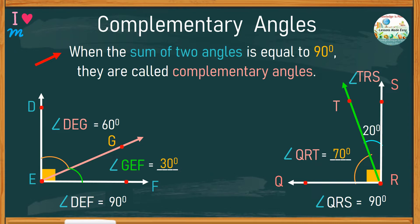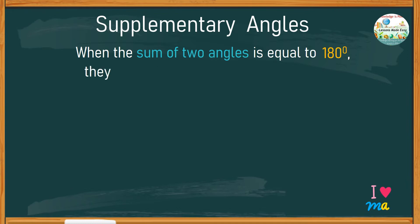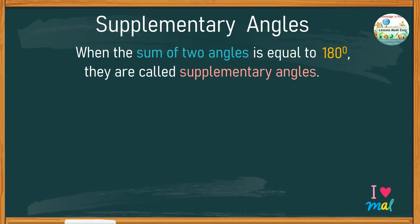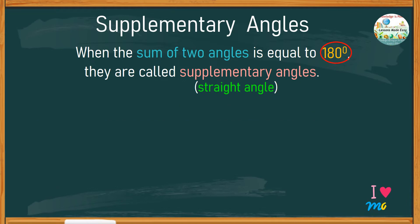It is pretty easy to distinguish complementary angles, is it not? How about supplementary angles? How do you distinguish supplementary angles? Take note of this: when the sum of two angles is equal to 180 degrees, they are called supplementary angles. We know that an angle with a measurement of 180 degrees is also called a straight angle. But what is the difference between a straight angle and a straight line? A line has no beginning and no end, while a straight angle is made up of two rays with one end point, and this end point is the vertex.